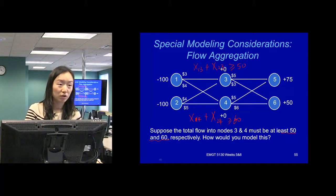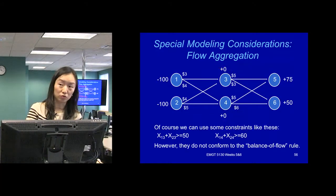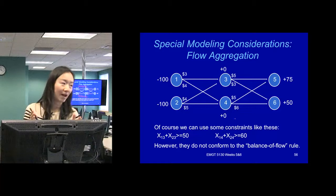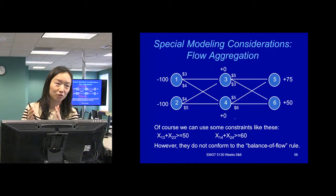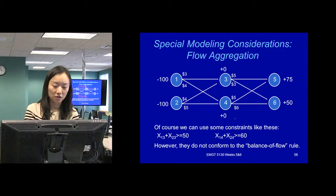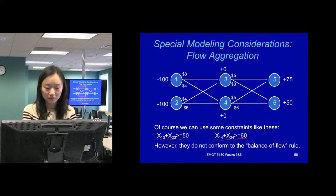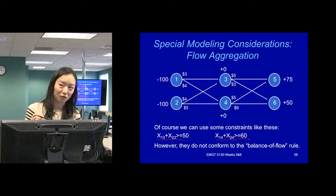But these two constraints do not follow the balance of flow rule. If we want to write a constraint in the format that's inflow minus outflow, greater than or equal to, less than or equal to the demand or supply there, how can we change this graph, change this network, so that this constraint is still following the balance of flow rule, or plus we add some side constraints?